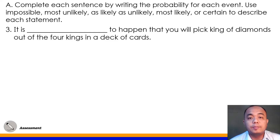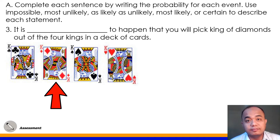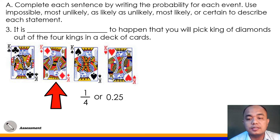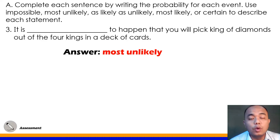Number 3: It is blank to happen that you will pick King of Diamonds out of the 4 Kings in the deck of cards. We have 1 King of Diamonds out of 4 Kings in the playing cards, so that's 1/4, which equals 0.25. Plotting this on our number line, the correct answer for number 3 is most unlikely — there's only a small chance of picking the King of Diamonds.